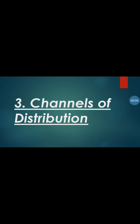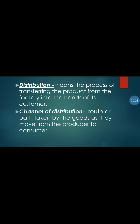Today we are going to start our third chapter, that is Channels of Distribution. After the production of goods in the industry, the next step is the distribution of that product. Distribution of goods is one of the most crucial and difficult phases of the marketing process. Distribution means transferring the product from the factory, from the manufacturer, into the hands of the customer, and for that purpose we use some path.